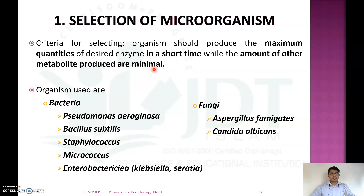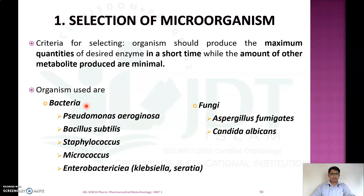The first step is selection of microorganism. The criteria for selection are that the organism should produce the maximum quantity of the desired enzyme, catalase, in a short time, and the amount of other metabolites produced should be minimum. Important examples of microorganisms used for catalase production include bacteria such as Pseudomonas aeruginosa, Bacillus subtilis, Staphylococcus, and Micrococcus species.